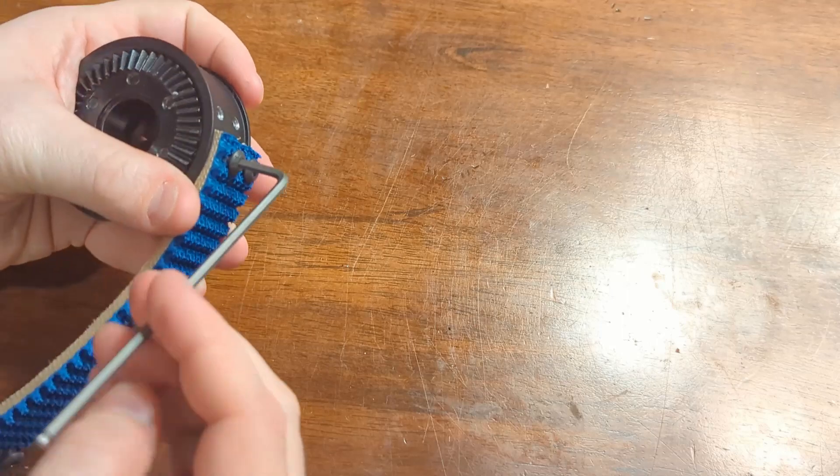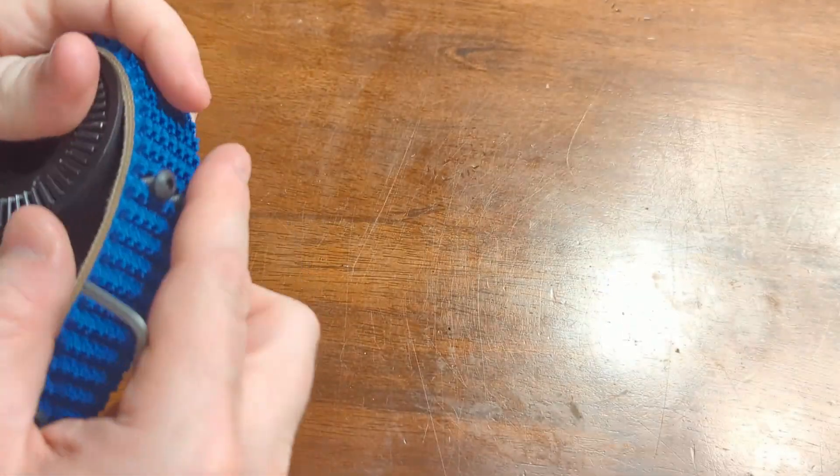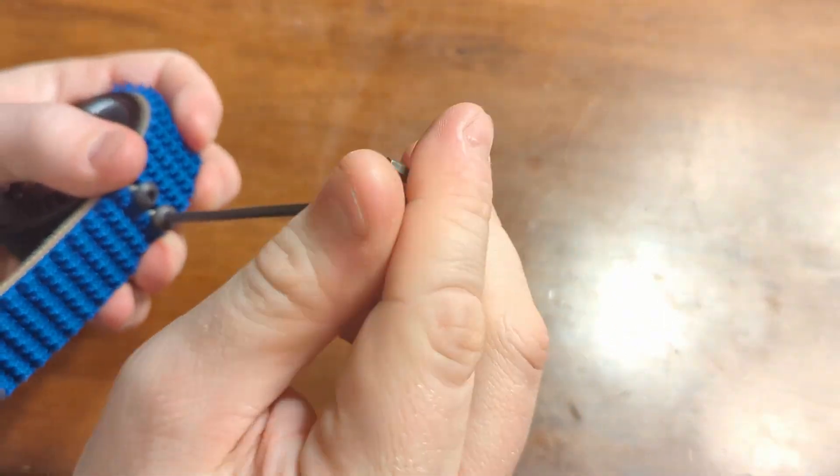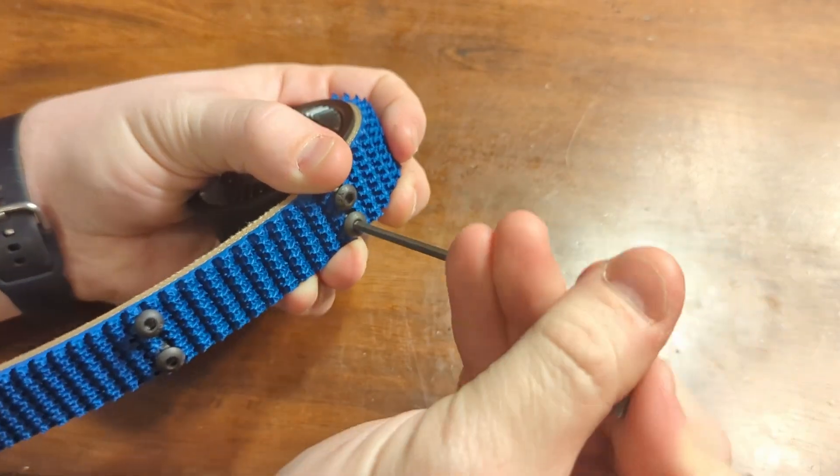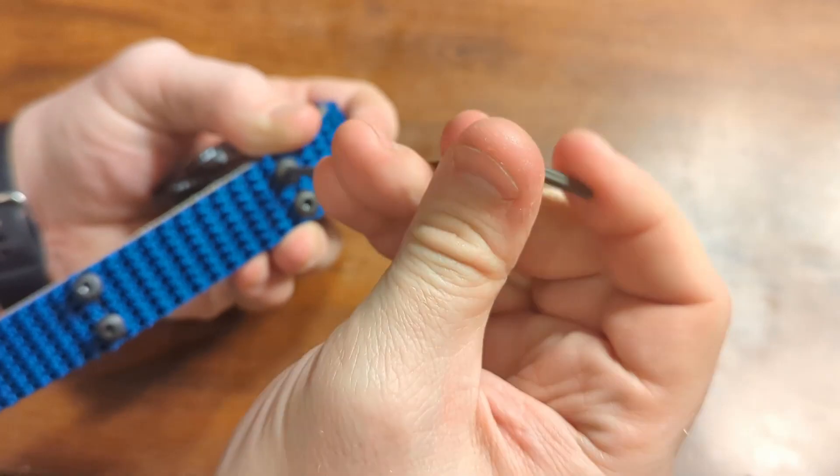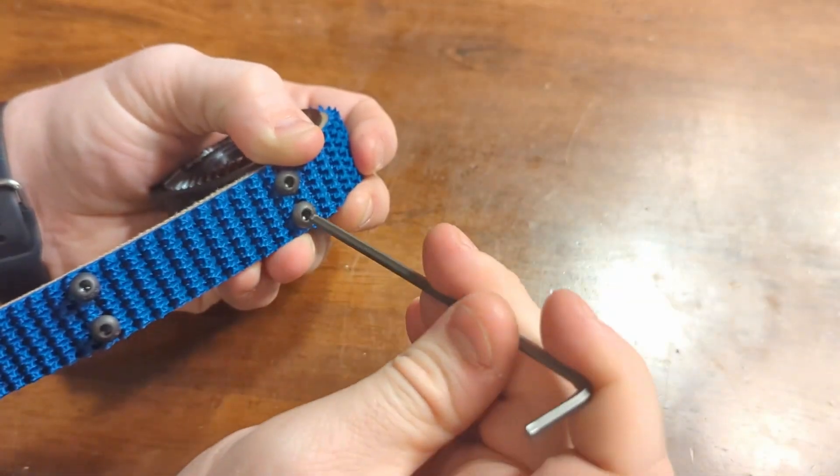You want to kind of make sure the button head bolts are catching those threads and it should go in fairly easily. If it's not, just back it out and kind of try again. And you'll go around the whole wheel starting on one end and start putting the bolts in as you go. Again, just making sure those threads are going in fairly smoothly. There shouldn't be a lot of resistance while you're doing this.